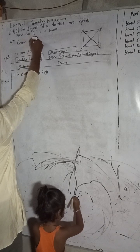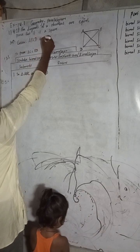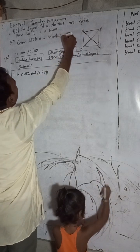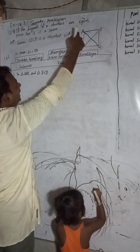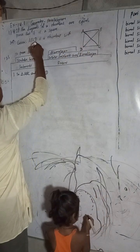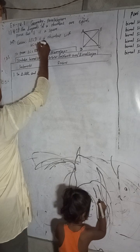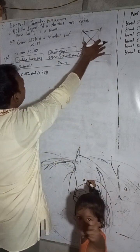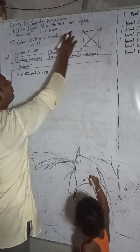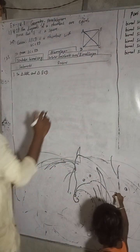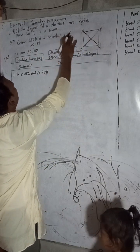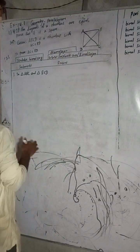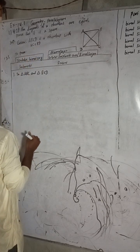So ABCD is a rhombus. ABCD is a rhombus. A square is also a type of rhombus. All squares are rhombuses but not all rhombuses are squares. So ABCD is a rhombus — given — with AC equal to BD. The question states the diagonals of the rhombus are equal, so AC = BD.